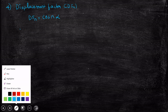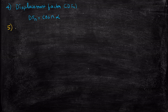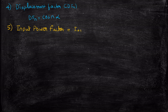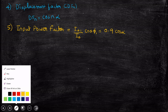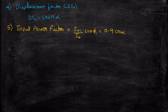The fifth important factor is the input power factor. Input power factor is given as the ratio of IS1 (fundamental component) to IS (total RMS). Substituting the previously found values, you will get 0.9 times cos(alpha). This is the input power factor. The sixth factor is the current distortion factor, given as the ratio of IS1 by IS, which equals 0.9.